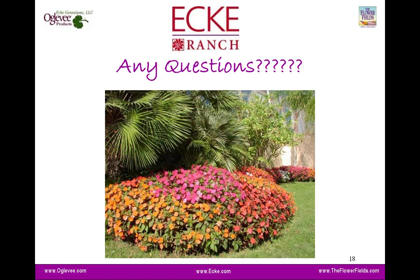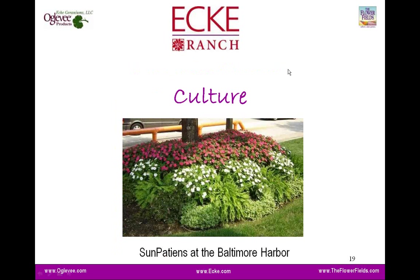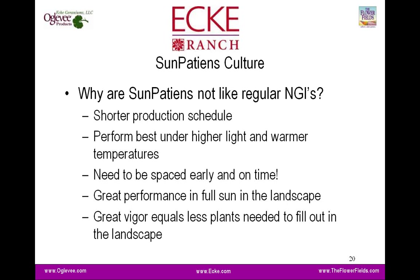Now we're going to move on to propagation. The key message throughout this entire webinar is that SunPatiens, regardless of how much they look like a New Guinea, are not like New Guineas. Since it's a crop so many growers are familiar with, we'll continually reference back against the New Guinea to give you an idea of how to position. SunPatiens have a shorter production schedule — from unrooted to finished plant two to three weeks faster than what you'd expect with New Guinea impatiens. And while they perform under higher light and warmer temperatures in the garden, in the production side they can be grown cooler, more like a geranium.